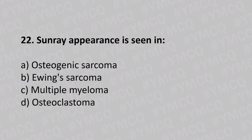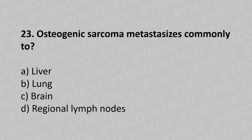Question number twenty-two: sunray appearance is seen in option A osteogenic sarcoma, option B Ewing sarcoma, option C multiple myeloma, option D osteoclastoma. The answer is option A, osteogenic sarcoma. Osteogenic sarcoma metastasizes commonly to option A liver, option B lungs, option C brain, option D regional lymph nodes.